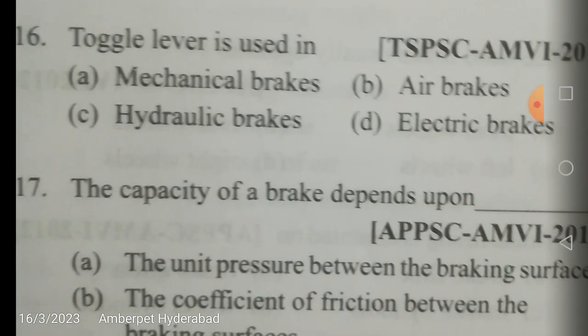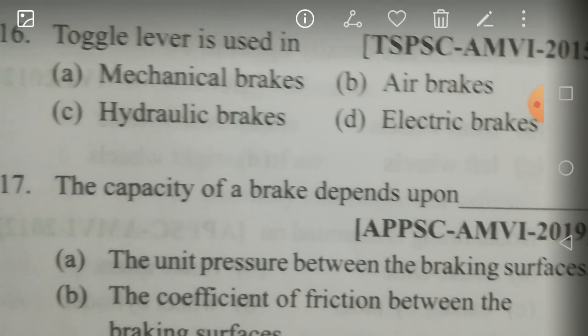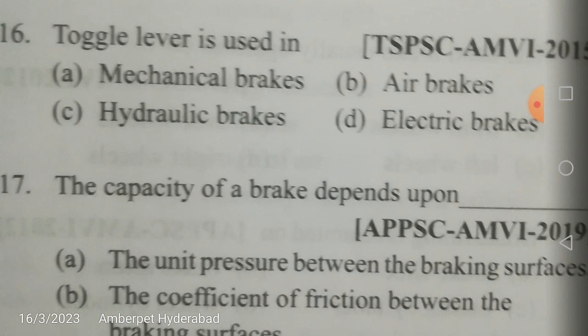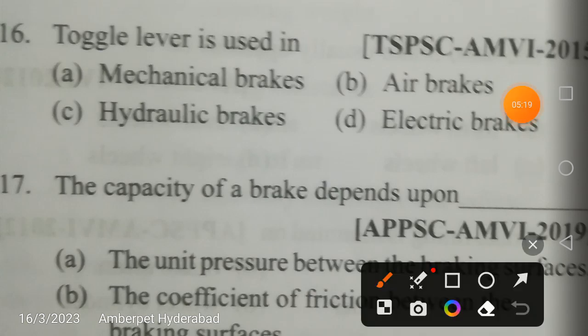The toggle lever is used in which system of brakes — mechanical, air, hydraulic, or electric? The answer is A, mechanical brakes. Mechanical brakes are operated by a cam or toggle lever, which is actuated through various mechanical linkages. These brakes are now largely obsolete as service brakes, though still used on rear wheels in many vehicles. Toggle levers are used in mechanical brakes — not in air, hydraulic, or electric brakes.